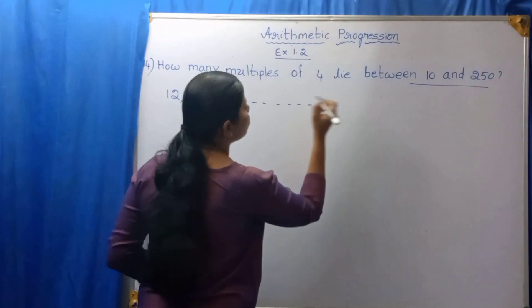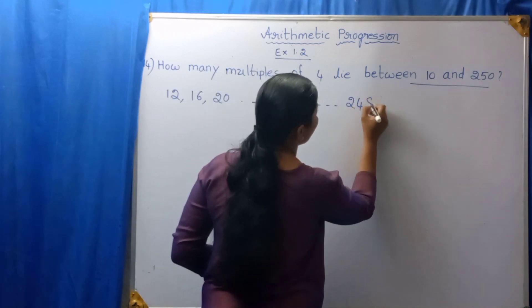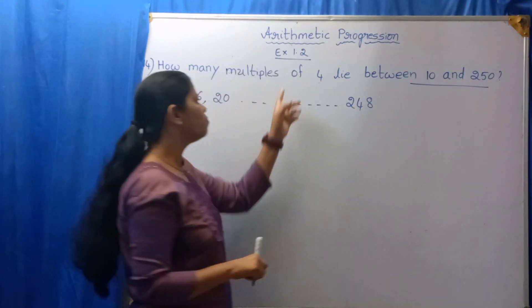The second number is 16 and the third number is 20. Like that, 248 is the last number which is the multiple of 4.